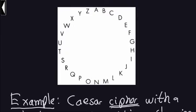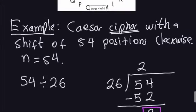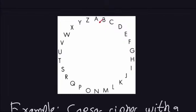Let me go back to the circular arrangement of letters to verify. Let's say we want to transform the letter A using a shift of 54 clockwise. Because the remainder we got is 2, we only need to move 2 positions clockwise. Starting at A, going around 26 is one full loop, another 26 is another full loop — that's 52. Then 53, 54: the letter A transforms to C.